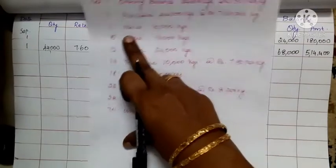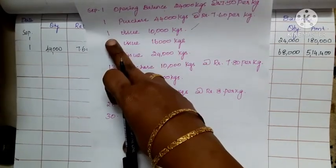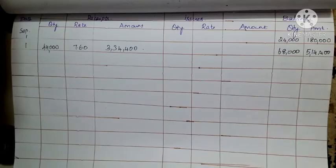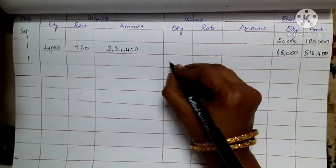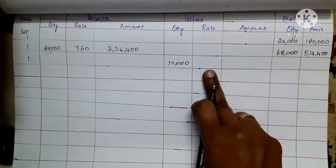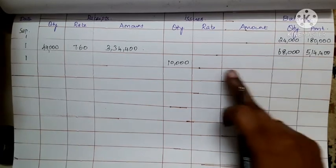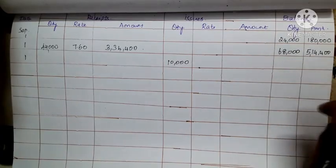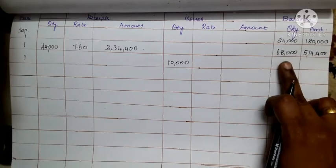Now the issue quantity is 10,000 on September 1. To find the rate under the weighted average method, divide the total balance amount by the total balance quantity: 5,14,400 divided by 68,000.